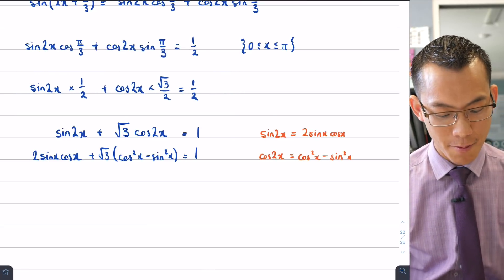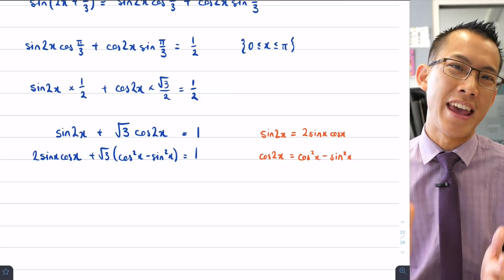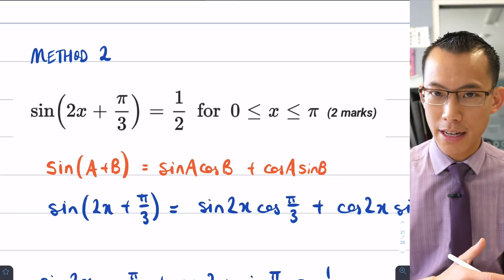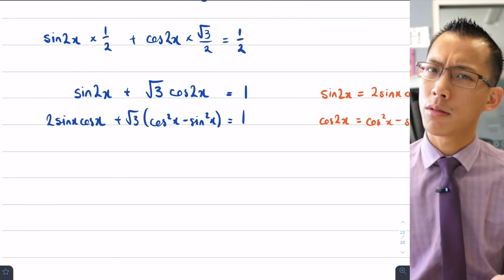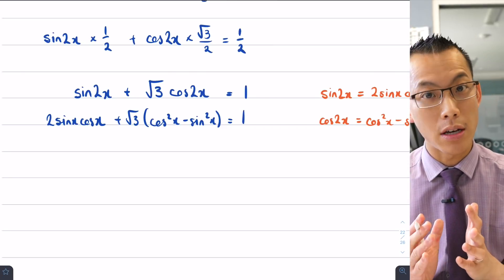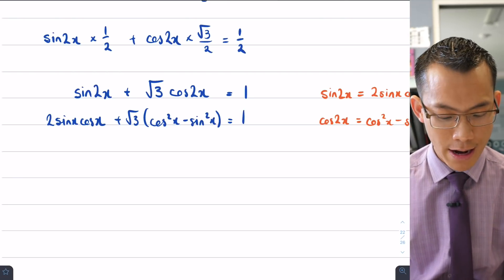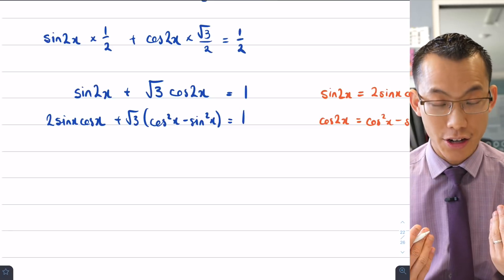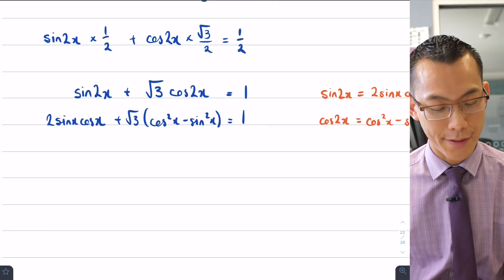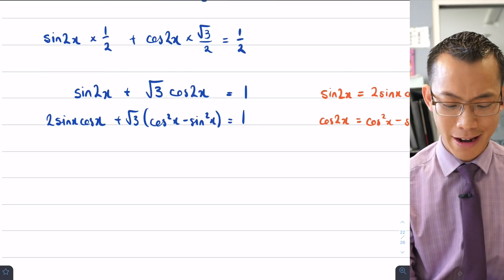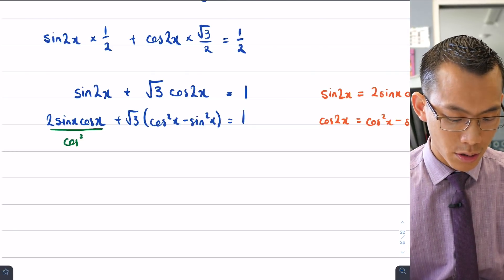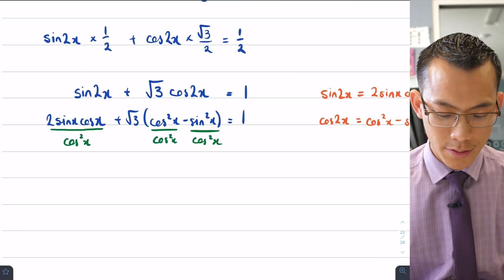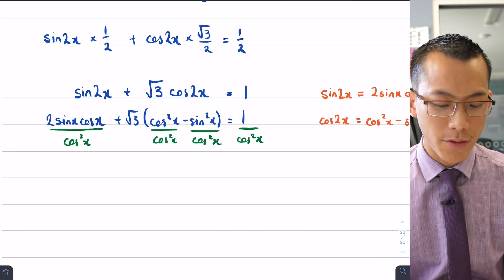You can see a quadratic is emerging — this is why I mentioned it earlier when I noticed double angles in the original question. Our strategy is to get everything in terms of a single trigonometric function. A handy trick is to divide everything through by an appropriate trig expression. I'm going to divide every term by cos²x, which will become clear why once I do the division.